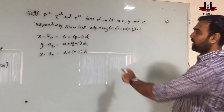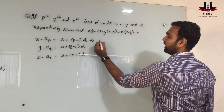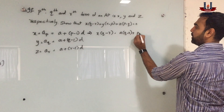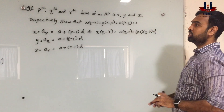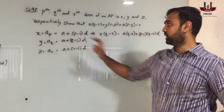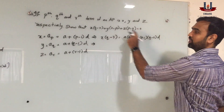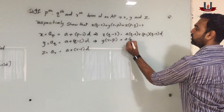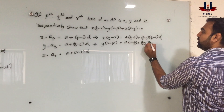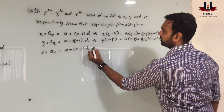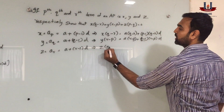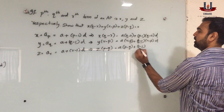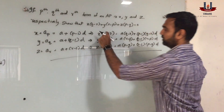Now let's see what to find: show that x(q minus r) plus y(r minus p) plus z(p minus q) equals zero. I will multiply (q minus r) with the first equation, so we get x(q minus r) equals a(q minus r) plus (p minus 1)(q minus r) multiplied by d. Now we will do the same with the second and third parts. We multiply (r minus p) on both sides of the second equation, giving a(r minus p) plus (q minus 1)(r minus p) into d. With the third equation we multiply (p minus q) on both sides, giving a(p minus q) plus (r minus 1)(p minus q) into d.